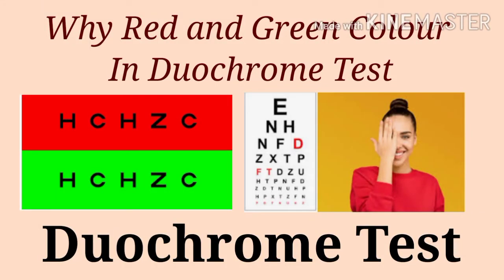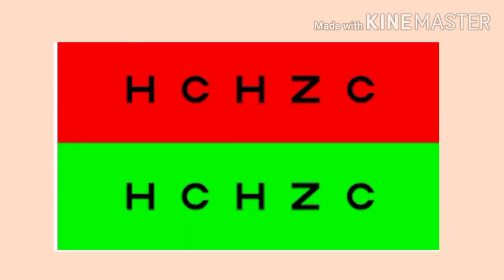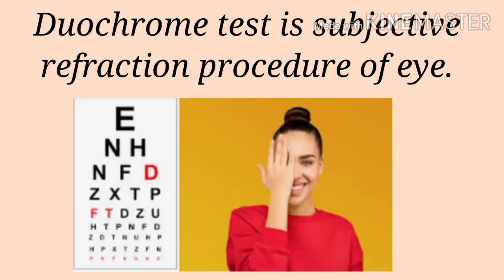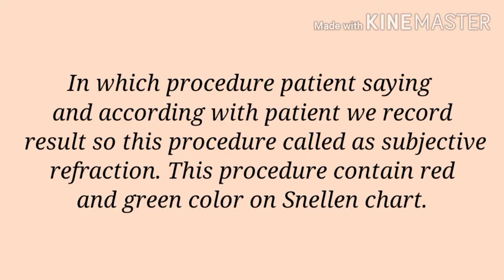Hello friends, today we are talking about the duochrome test. What is the duochrome test? It is also called the red and green test. The definition of the duochrome test is: it is a subjective refraction procedure of the eye in which the result is recorded according to the patient's responses, so this procedure is called subjective refraction.